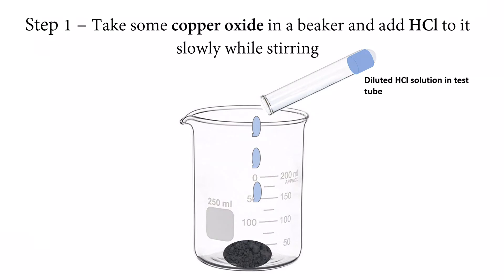What do we have to do with the stirrer? We have to stir it well, because if it is a metal it will be difficult to dissolve. Stirring will speed it up — it will work as a catalyst.